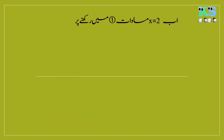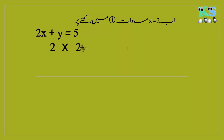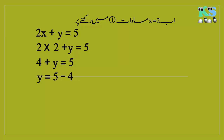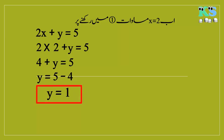X کی قیمت Equation No.1 میں رکھنے پر: 2X plus Y equal to 5۔ X کی قیمت رکھنے پر 2 multiply 2 plus Y equal to 5، 2 multiply 2 equal to 4، تو 4 plus Y equal to 5۔ 4 equal کے ادھر جا کر minus میں تبدیل ہوگا، Y equal to 5 minus 4۔